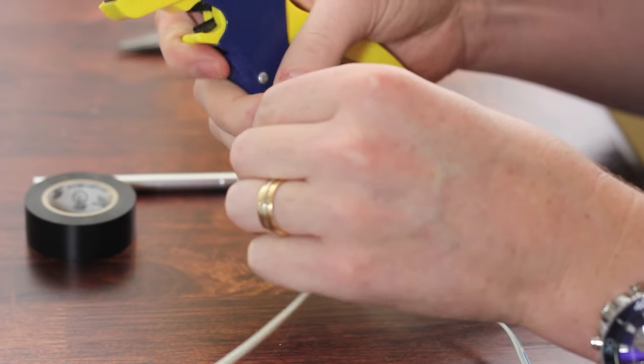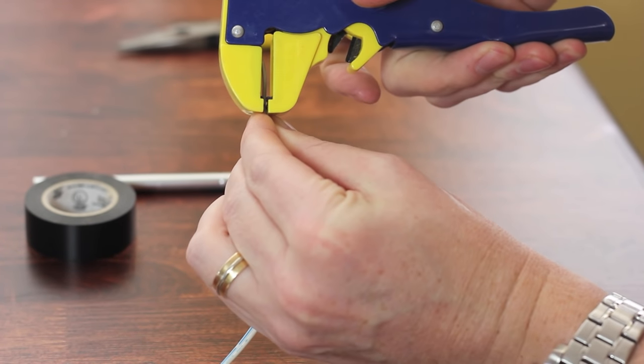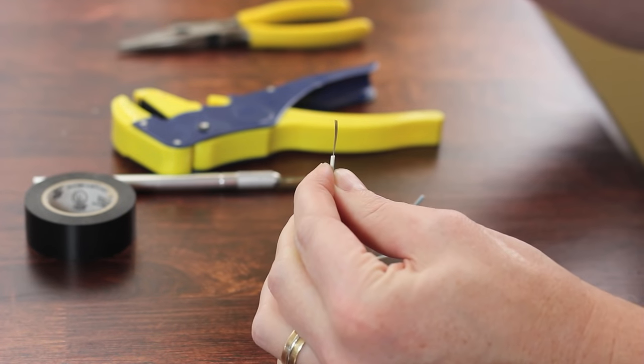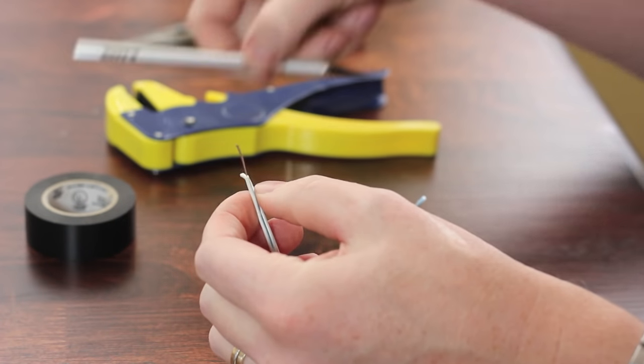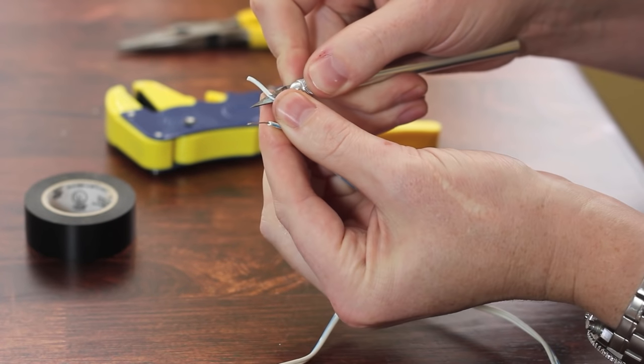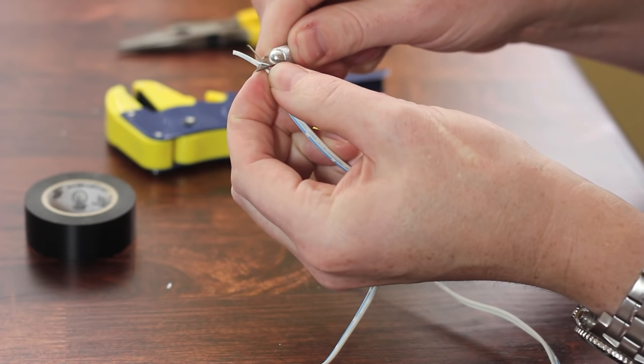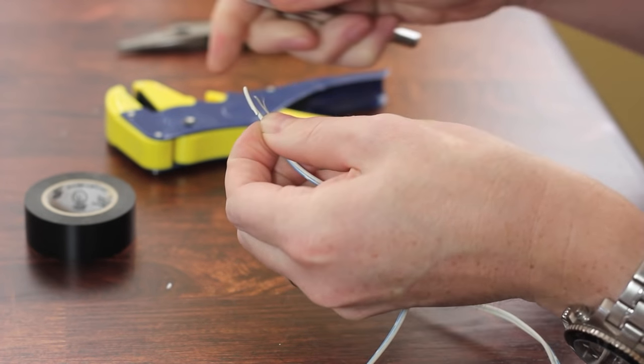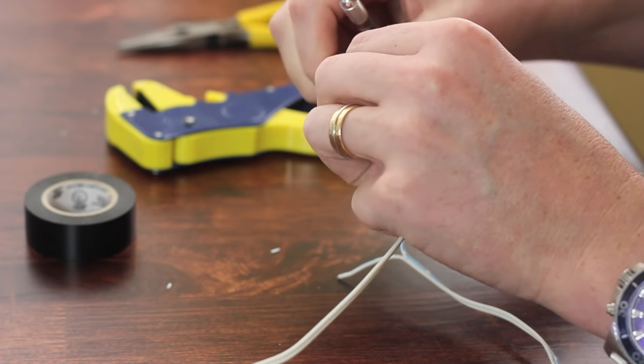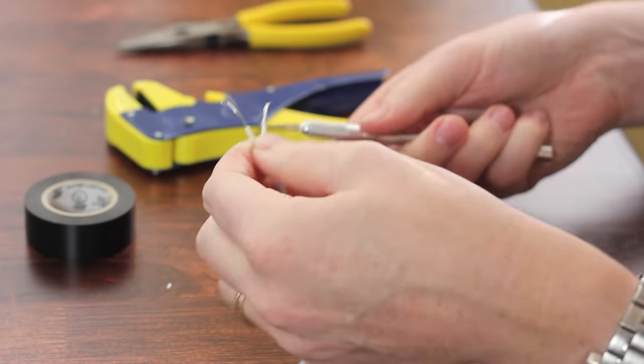With this wire stripper it's very simple. I just crimp onto it like this and squeeze, and that takes the insulation right off. Another way to do that is to use your blade and start to strip that wire off. The thing here is you've got to be careful not to cut into the wires themselves. You've got to be delicate with it. Once you get it close, you can usually just pull it off. So there's a couple ways to do that.